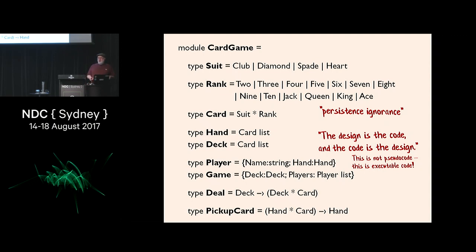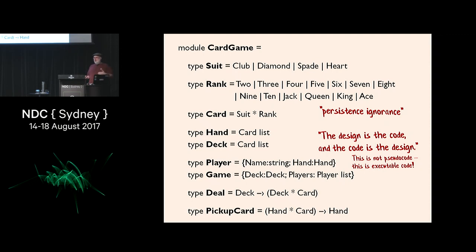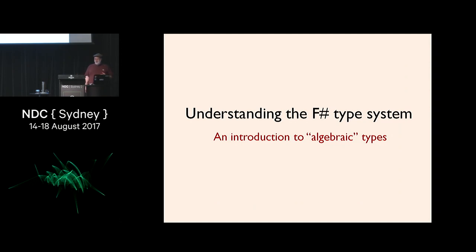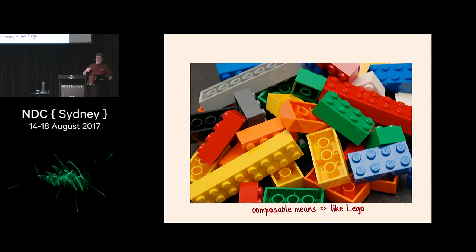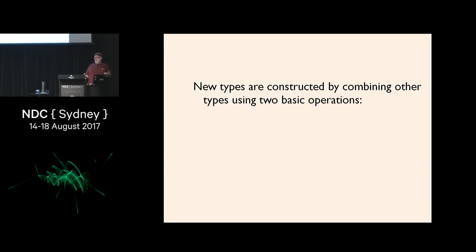Typically in an F# project you would put this as the first file, and then you have more complicated code for executing the algorithms. But this part is shareable between you and the domain expert — you don't need UML diagrams or out-of-date documentation or 200-page requirements documents. Now, the F# type system has what's called an algebraic type system — as do Haskell, OCaml, and most functional languages. I'll use the word 'composable type system' instead — composable like Lego, where you can glue pieces together to make another piece. Given two types, you can combine them to make another type, and there are two ways: you can multiply them and you can add them.